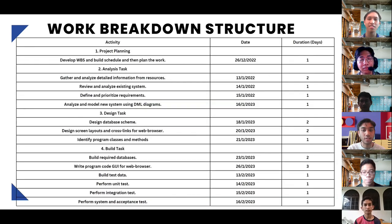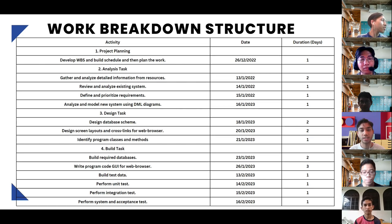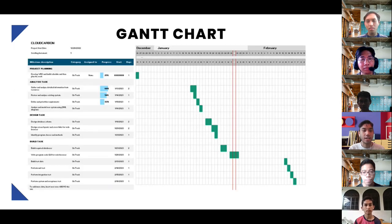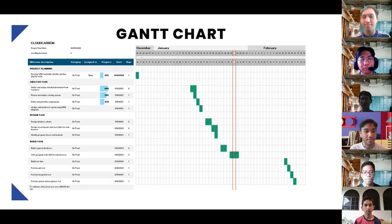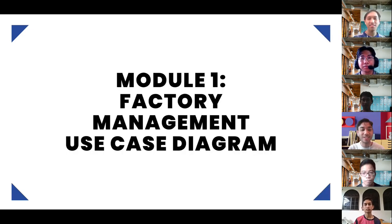For the work breakdown structure, since we have similar work breakdown structures, we provide one WBS as you can see on the slide. The last part is the Gantt chart, and there are four modules — starting with module one, factory management.